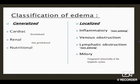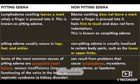The next is localized edema. Localized edema is mainly present in case of inflammation, which is non-pitting in nature, venous obstruction or lymphatic obstruction — that too is non-pitting in nature — or miliary, which is a congenital abnormality in the lymphatic system. Lymphatic edema and inflammatory edema result in non-pitting type of edema, and venous obstruction causes pitting type of edema.